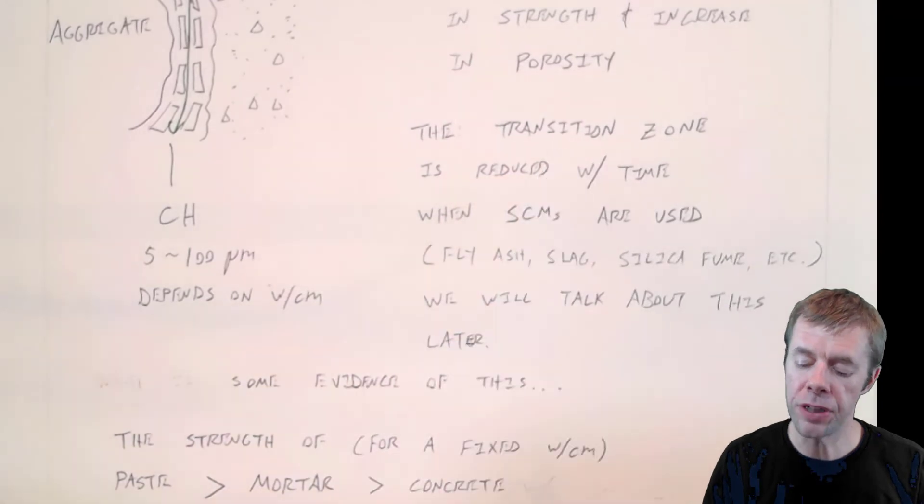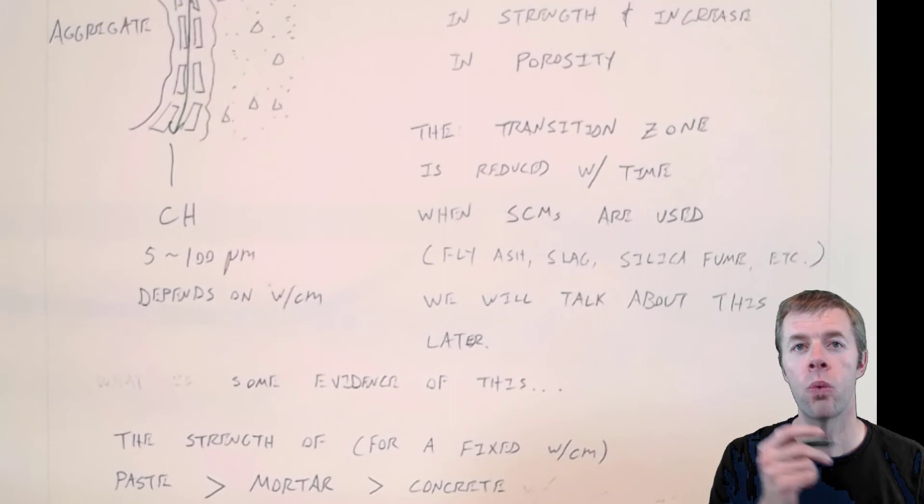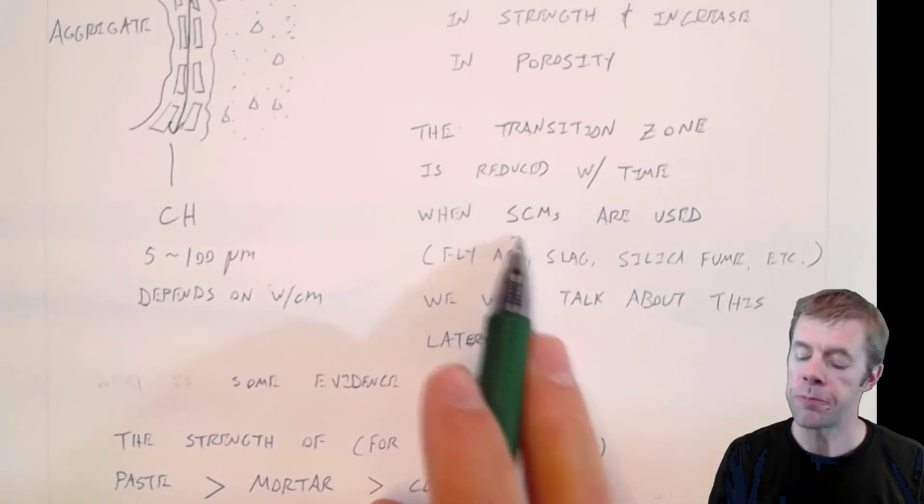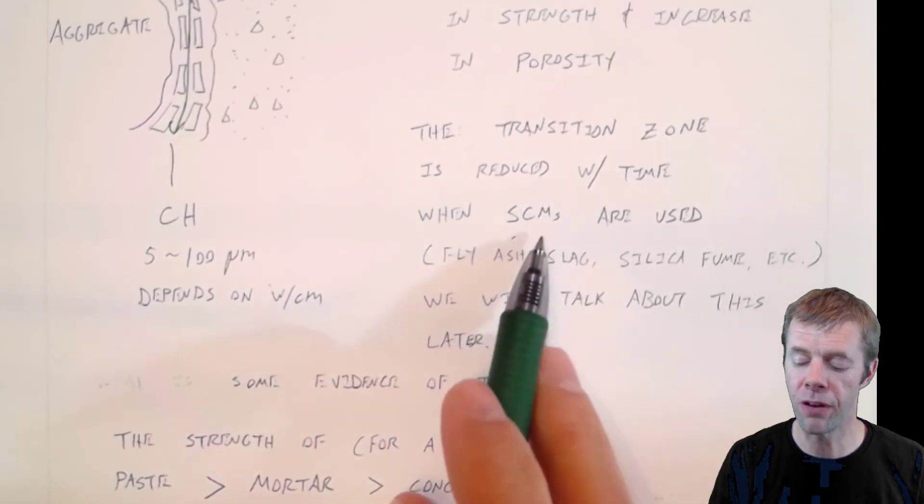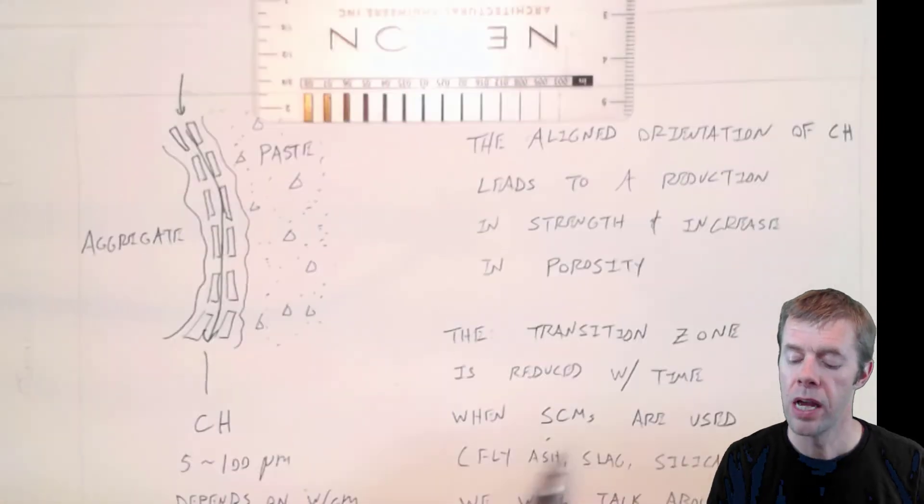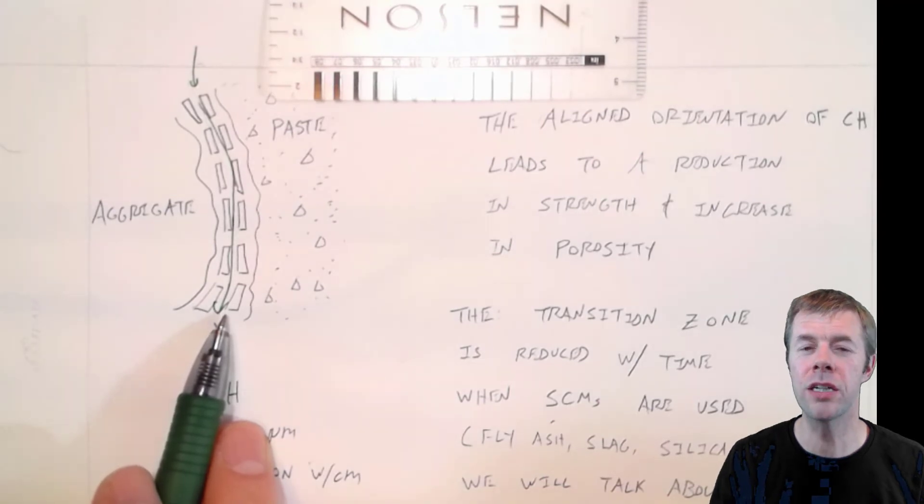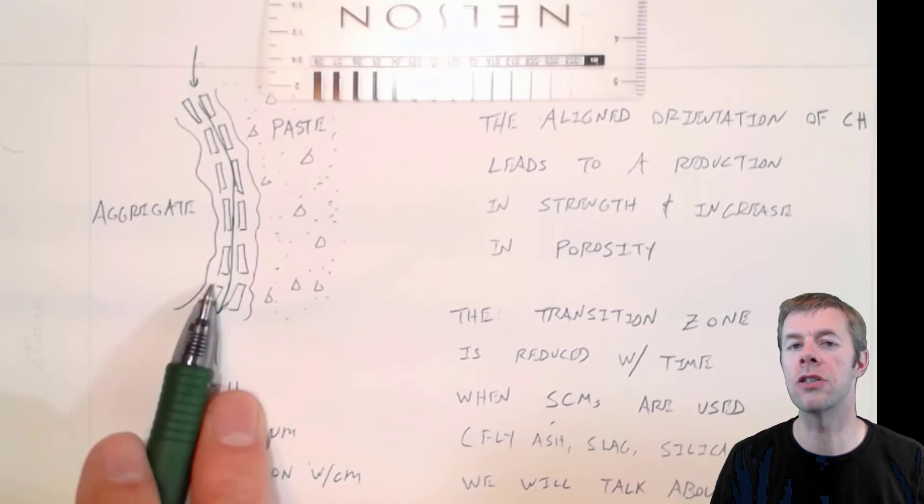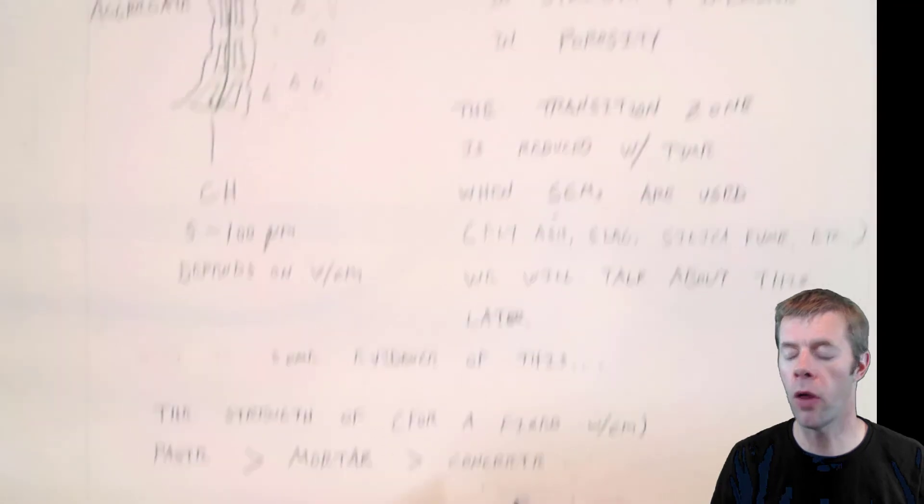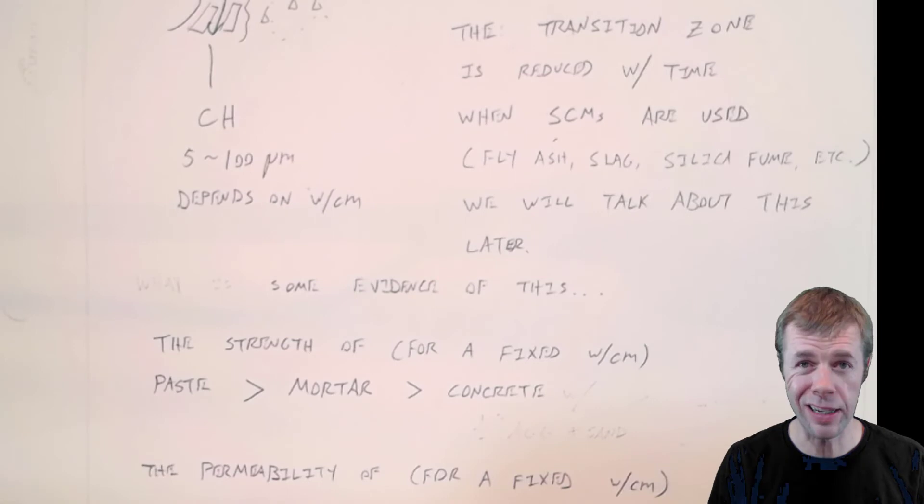And the good news is, is this transition zone can be reduced with time. Especially if you use something called an SCM. That's a secondary cementitious material. That's like fly ash, slag, silica fume. The concept is that this calcium hydroxide should be consumed over time. We'll talk more about that coming up. It should be consumed and you should make more CSH. So that should get smaller.